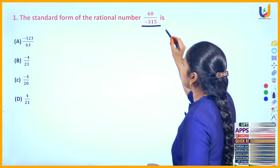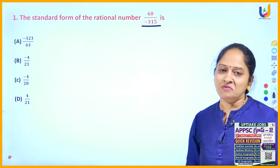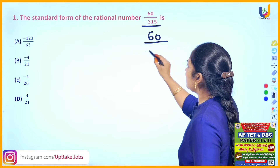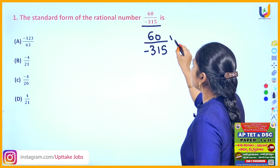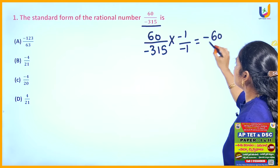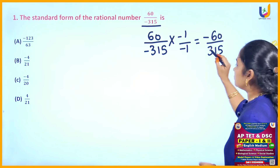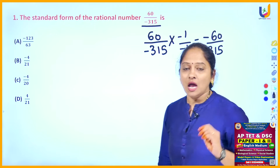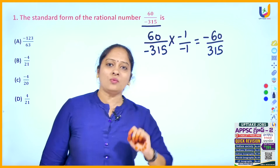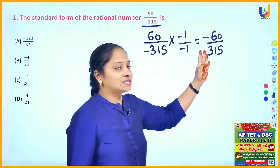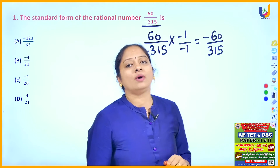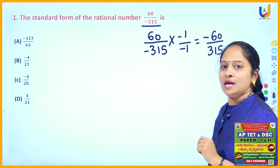In this question the number is 60 by minus 315. First, make the denominator positive by multiplying by minus 1. Then the problem turns into minus 60 by 315, so the first condition is satisfied. Now the second condition is the HCF of numerator and denominator should be 1, so you have to divide both numerator and denominator by their HCF.